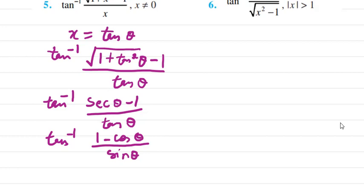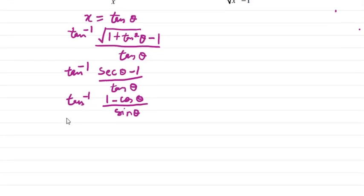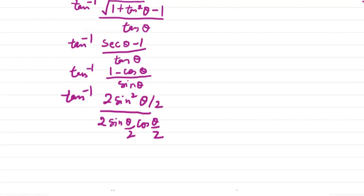Now 1−cosθ can be written as 2sin²(θ/2), and sinθ can be written as 2sin(θ/2)·cos(θ/2). The sin(θ/2) terms cancel, leaving tan inverse of tan(θ/2). So the value is θ/2. Since x = tanθ means θ = tan⁻¹x, the final answer is tan⁻¹(x)/2.